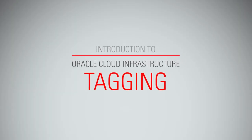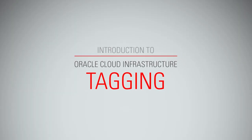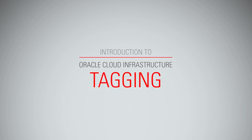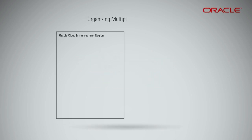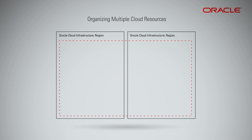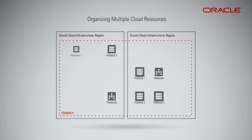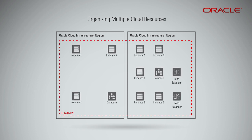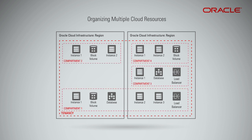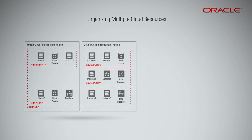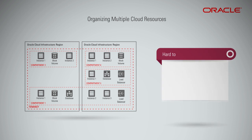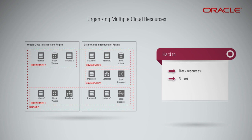Introduction to Oracle Cloud Infrastructure Tagging. Consider this scenario: you have multiple cloud resources — for example, compute instances, load balancers, and block volumes across multiple compartments in your tenancy. It is becoming increasingly hard to track resources used for specific purposes, report on them, or take bulk actions on them. Does this sound familiar?